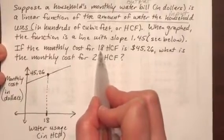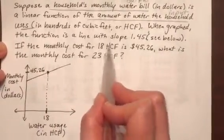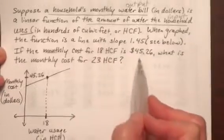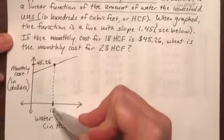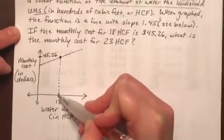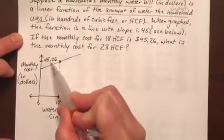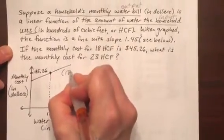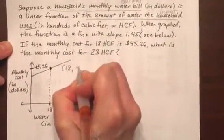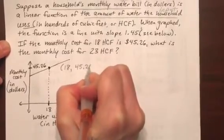And the monthly cost for 18 HCF, or hundreds of cubic feet, is $45.26. So on our graph, we see that at the input 18, we get an output of 45.26. That means our ordered pair here would be (18, 45.26).